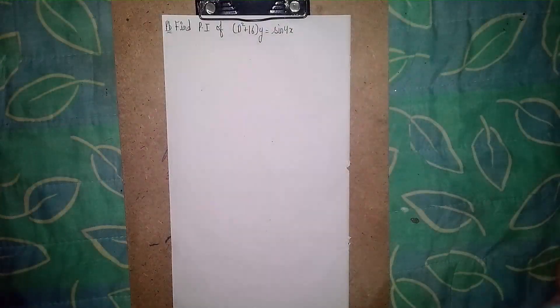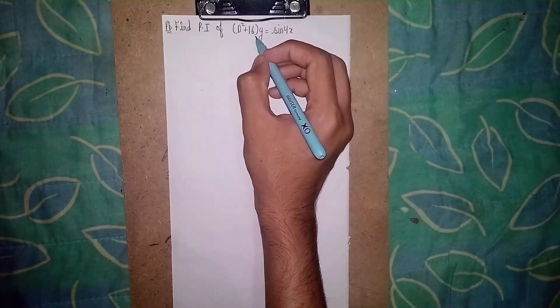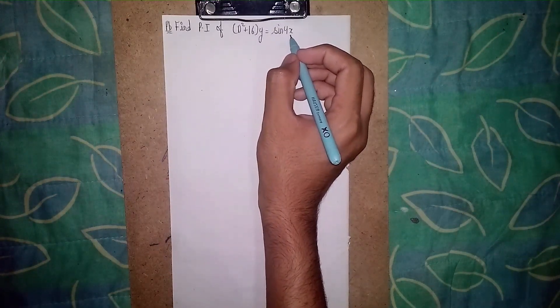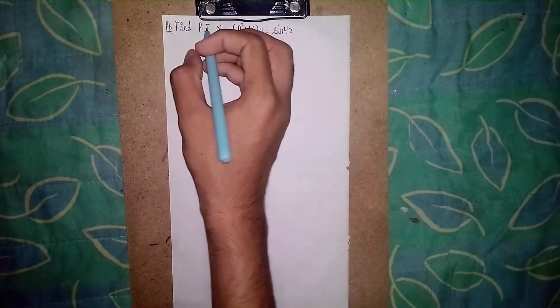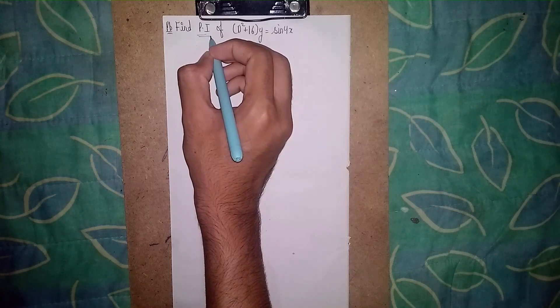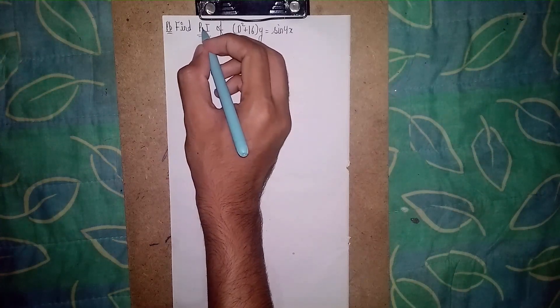Hello everyone, welcome back to my channel. First question: Find PI of (D² + 16)y = sin 4x. This is a non-homogeneous differential equation. PI means particular integral; in exams it's given in short form as PI.